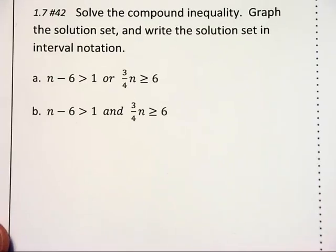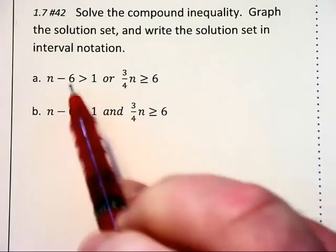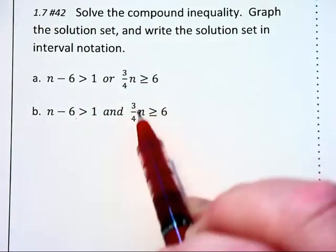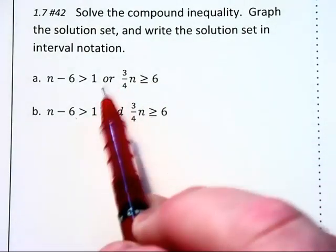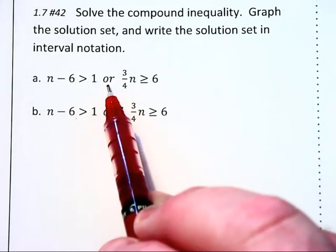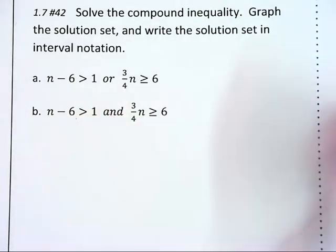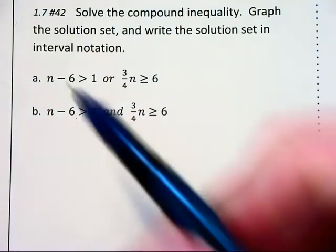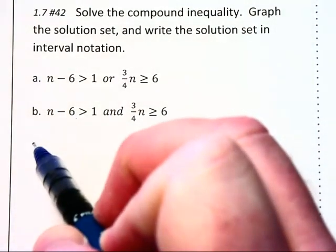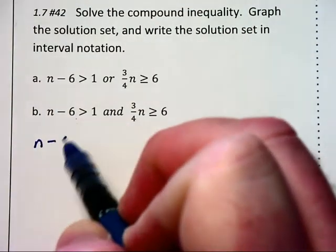Now we have one more problem. This one gives us the same inequalities, but it asks one time for us to find the union with the word or, and the second time to find the intersection with the word and.